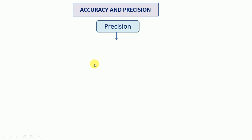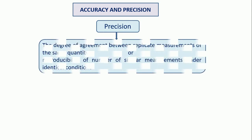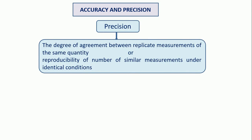Now we are going to explain precision. Precision is somewhat different from accuracy. What is the precision? The degree of agreement between the replicate measurements of the same quantity — or reproducibility of a number of similar measurements under identical conditions. That means the calculated value may not be closer to the actual value, but how many times we have calculated and found that value experimentally — and it is similar. So that is called precision.